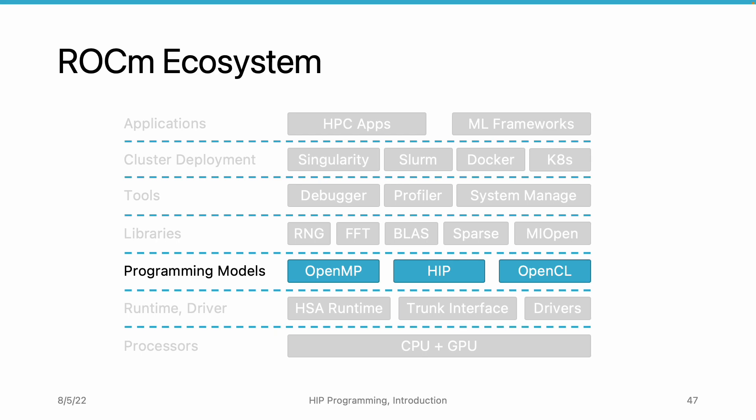Above the runtime and driver layer, we have the layer that provides different types of programming models, such as OpenCL and HIP. Each programming model has its own runtime library implementation, but all these runtime implementations are based on the HSA runtime. They invoke the APIs provided by the HSA runtime. ROCm currently supports OpenMP, HIP, and OpenCL. We mainly cover HIP in this course.